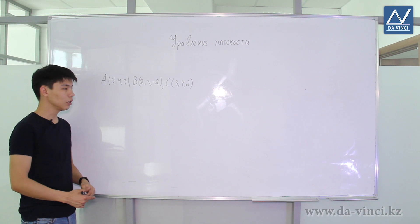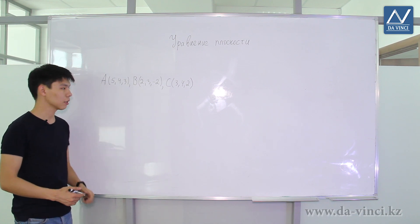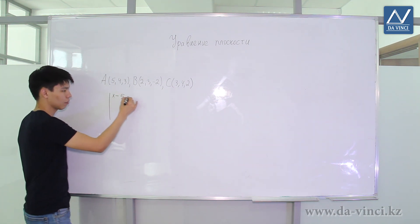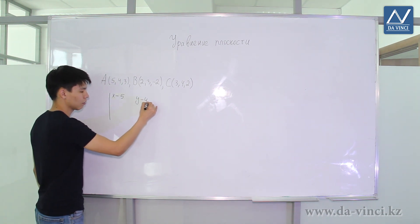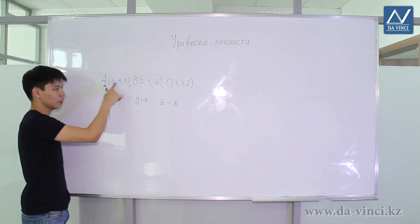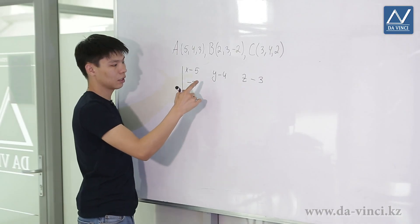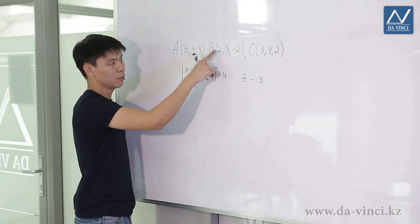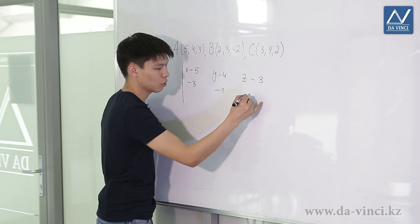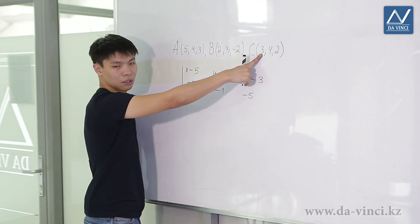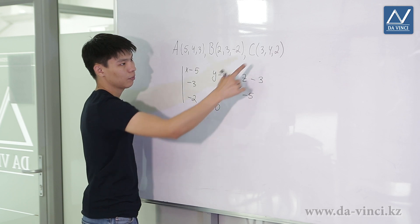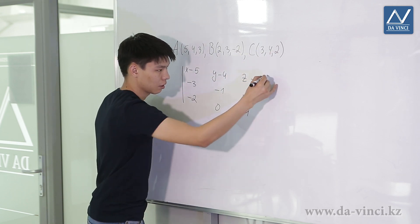Let's consider an example. Suppose we have 3 points and it is required to find the equation of the plane that passes through them. We make a determinant for that. The first row is (x minus x1). The second row is (x2 minus x1), that is 2 minus 5 = minus 3; (y2 minus y1), that is 3 minus 4 = minus 1; and (z2 minus z1), that is minus 2 minus 3 = minus 5. The third row is (x3 minus x1), that is 3 minus 5 = minus 2; (y3 minus y1), that is 4 minus 4 = 0; (z3 minus z1), that is 2 minus 3 = minus 1. Is equal to 0.